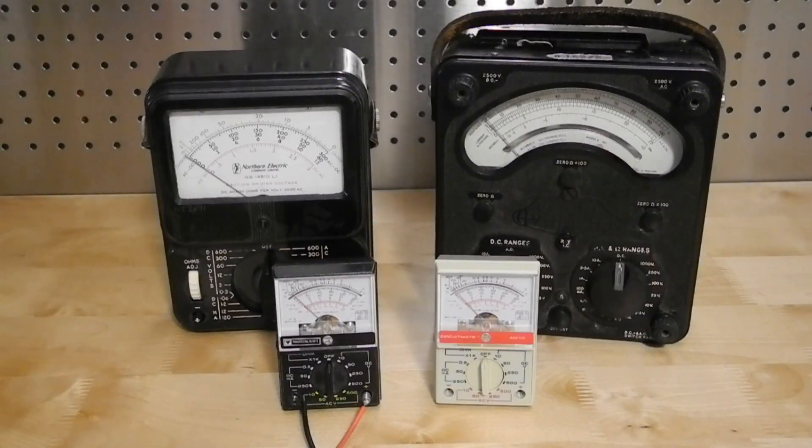This is typically called a VOM or volt ohm milliamp meter. These have been around since the late 1800s, and here's a few representative models.